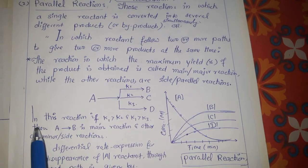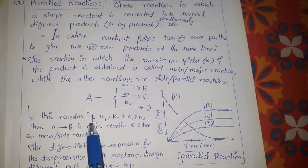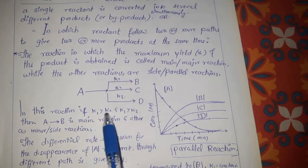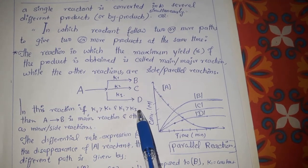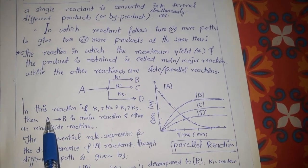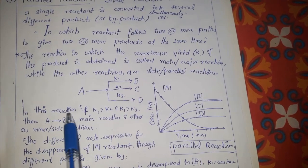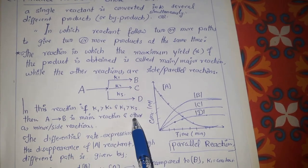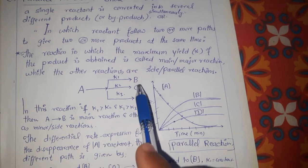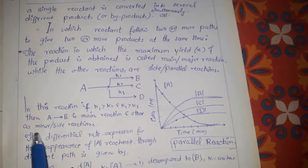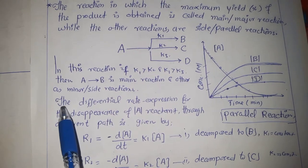The concentration of products B, C, and D is increasing with the passage of time. From the rate constants we can estimate which one is our major product. For example, if K1 is greater than K2 or K1 is greater than K3, then reactant A is going to product B, and B is the major reaction product while C and D are minor products.